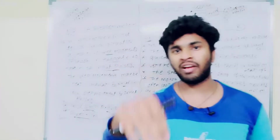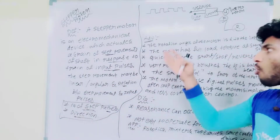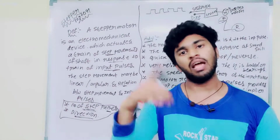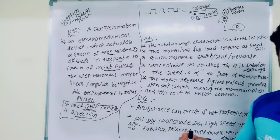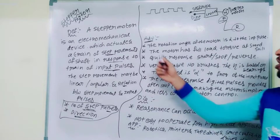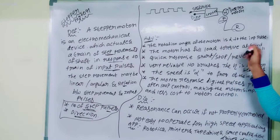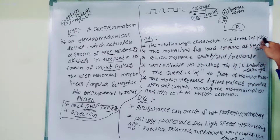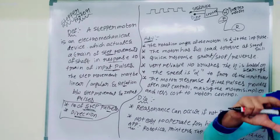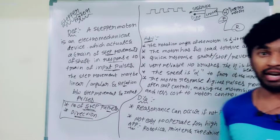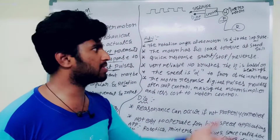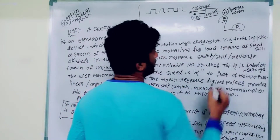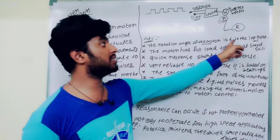I will explain the advantages and disadvantages. Remember the advantage and disadvantage — if you have already understood the operation, you can choose the stepper motor. The first advantage is that the rotation angle of the motor is directly proportional to the input pulses. If you have a stepper motor, it is dependent on the input pulses — any input pulses will rotate the motor.